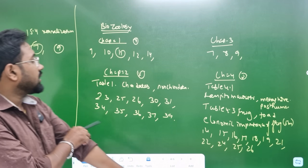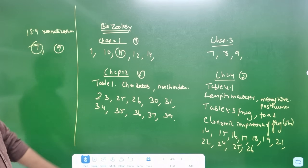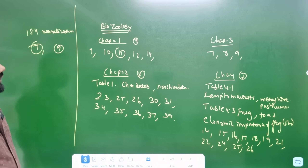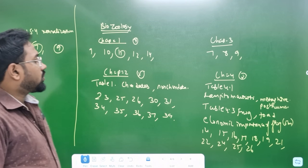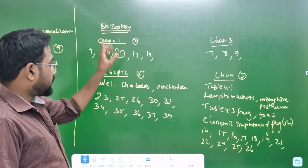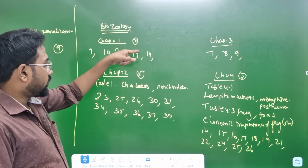Zoology — Chapter 1. Sections 9, 10, 11, 12, 14, 11 — 5 marks.